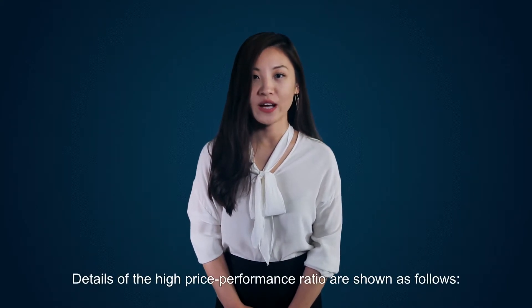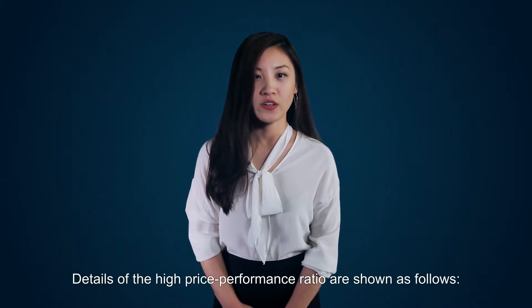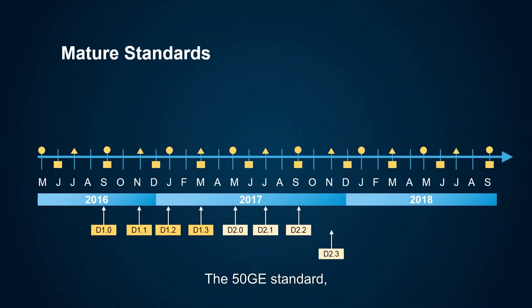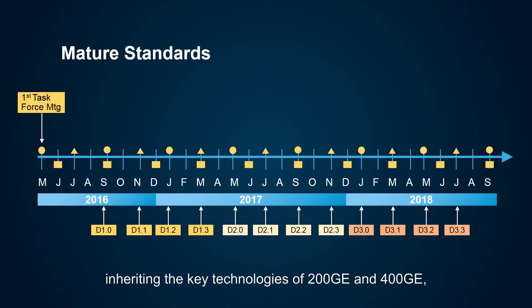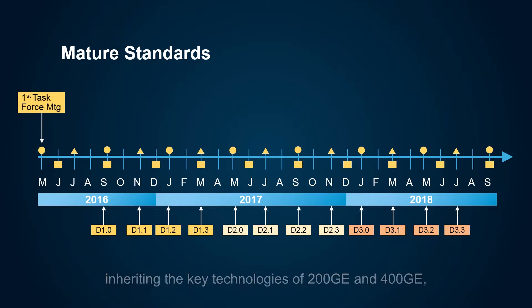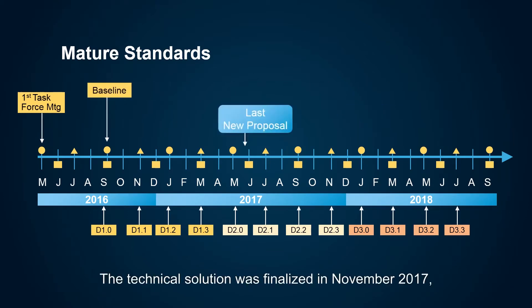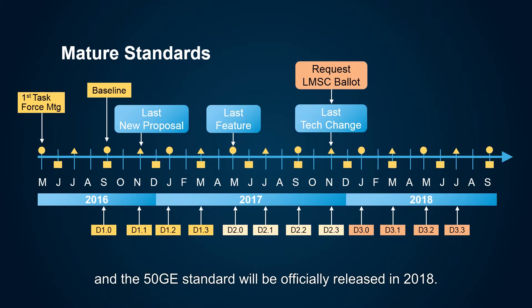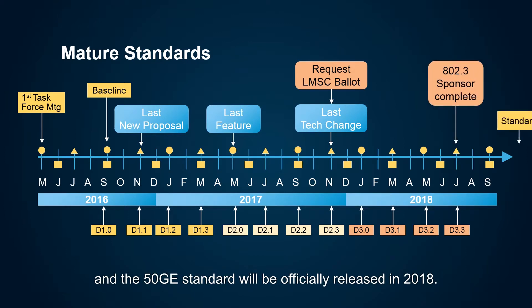Details of the high price-performance ratio are shown as follows. First, mature standards: the 50GE standard, inheriting the key technologies of 200GE and 400GE, was initiated in March 2016. The technical solution was finalized in November 2017, and the 50GE standard will be officially released in 2018.